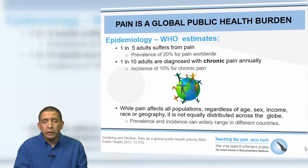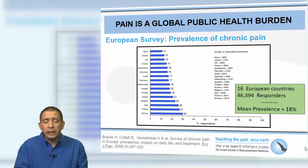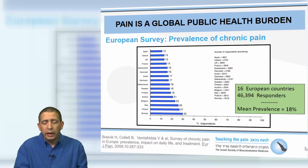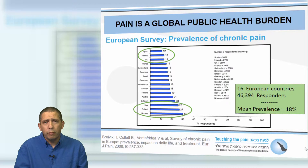However, pain is not equally distributed across the globe. In a European survey on prevalence of chronic pain published by Berwick et al. in 2006 in the European Journal of Pain — covering more than 16 European countries and over 46,000 responders — the mean prevalence for chronic pain was 18%. Spain, Ireland and the UK were as low as 12–13%, while Italy, Poland and Norway went up to 26% and even 30%.